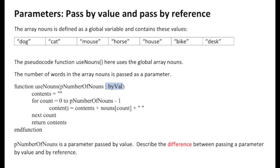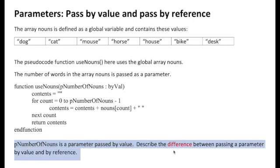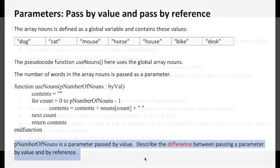The question isn't asking about the functionality of the function itself, so that's not really important here. What the question asks is: p_number_of_nouns is a parameter passed by value — describe the difference between passing a parameter by value and passing a parameter by reference.